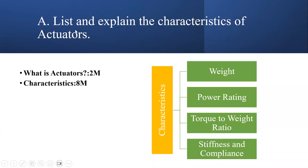The OR choice will be: list and explain the characteristics of actuators. You will tell what an actuator is for 2 marks, and then completely explain the characteristics of actuators: weight, power rating, torque to weight ratio, stiffness, and compliance. Each characteristic should be explained in brief — what is weight, why we choose weight as a characteristic, why power rating is required, and so on. This will have 8 marks weightage, for a total of 10 marks.